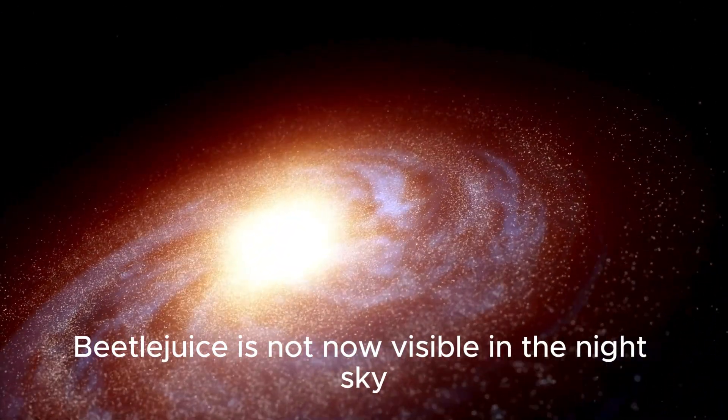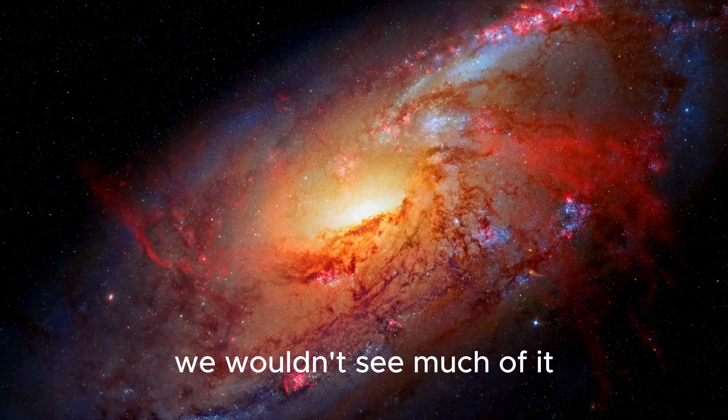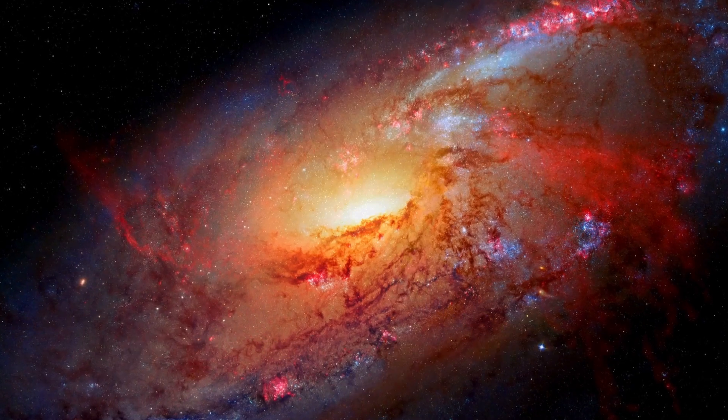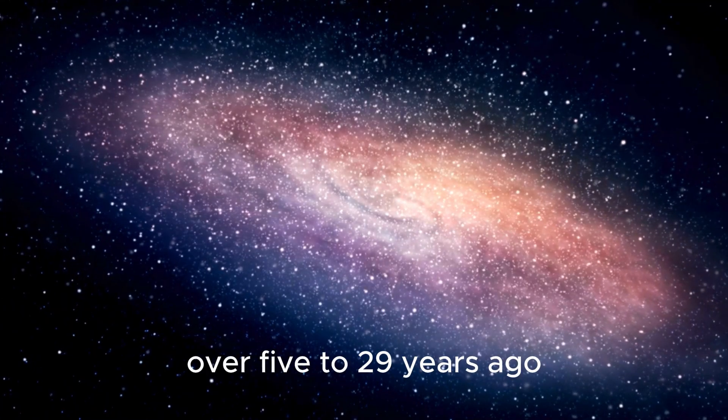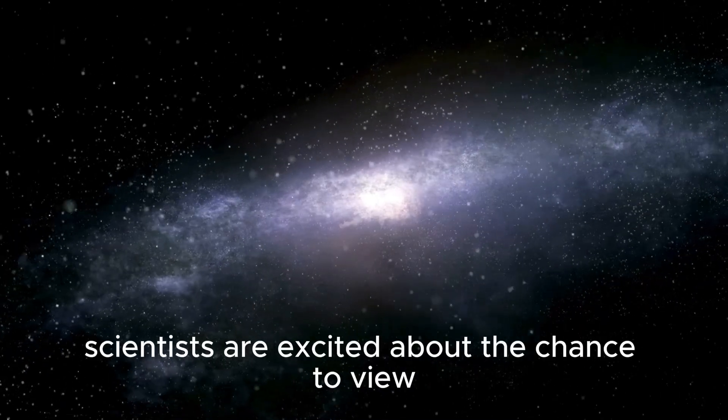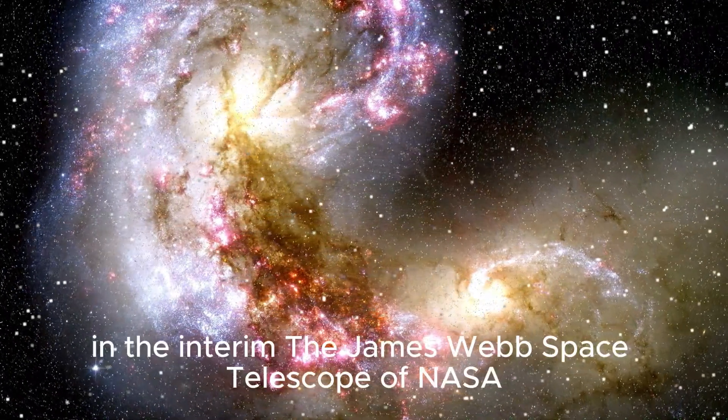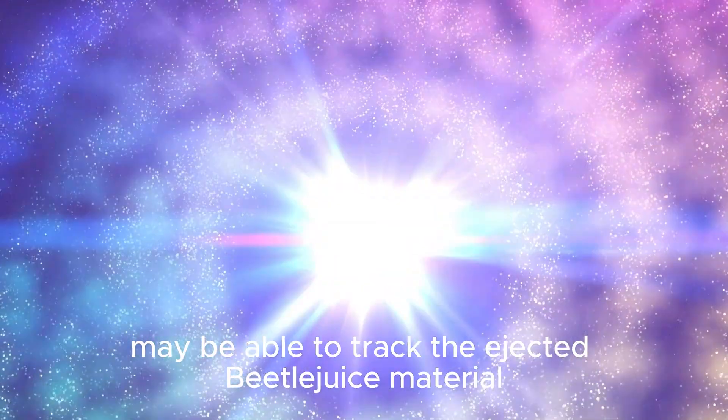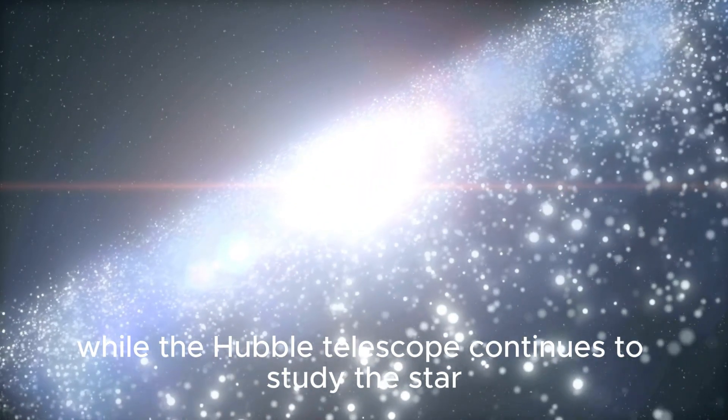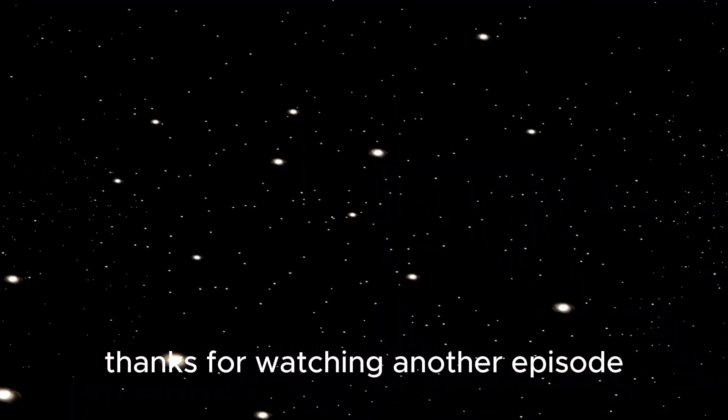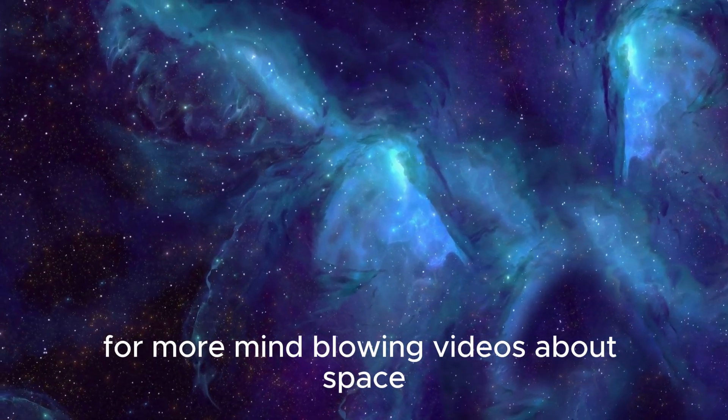Betelgeuse is not now visible in the night sky, so don't go looking for it there. Even if it went supernova right now, we wouldn't see much of it, except it is in the midday sky during August. Betelgeuse might have already gone supernova over 5 to 29 years ago, and we haven't yet seen its light. Scientists are excited about the chance to view Betelgeuse's epic eruption and recuperation. In the interim, the James Webb Space Telescope of NASA may be able to track the ejected Betelgeuse material as it travels across space, while the Hubble Telescope continues to study the star. Thanks for watching another episode. While you're still here, make sure to click the video on your screen for more mind-blowing videos about space.